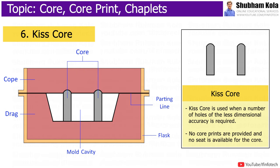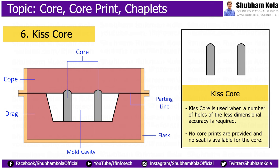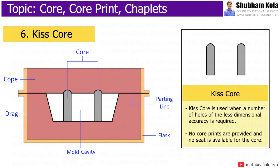The kiss core is used when a number of holes of less dimensional accuracy is required. In this case, no core prints are provided and no seat is available for the core. The core is held in position approximately between the cope and drag, and hence is referred to as a kiss core.